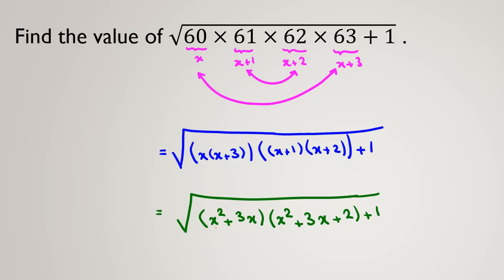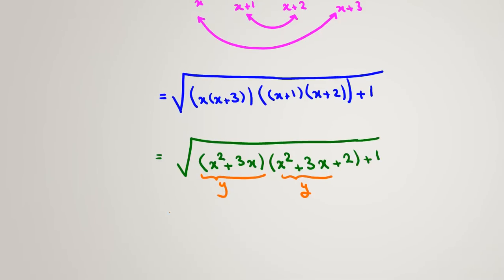Now we use another changing variable, x squared plus 3x. I call this term y. So it will be also x squared plus 3x y. So it will be square root of y times y plus 2 plus 1, because of this.